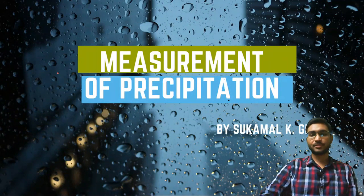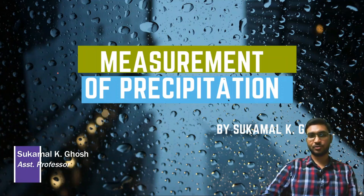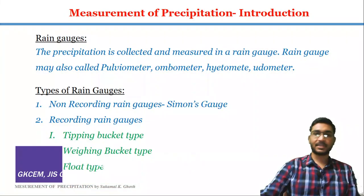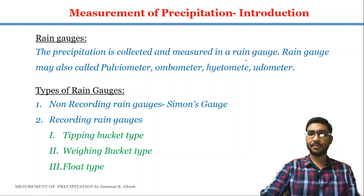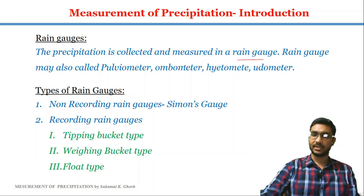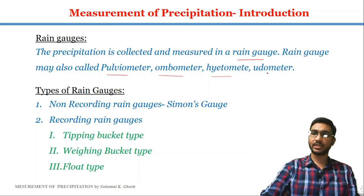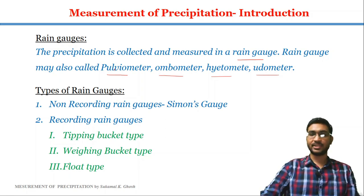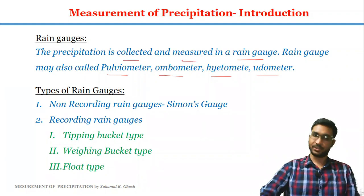Hello everyone, welcome to this video lecture of engineering hydrology. In this particular video we are going to discuss about how we can measure the precipitation. Precipitation is collected and measured in a rain gauge. The rain gauge may also be called as pluviometer, ombometer, hydrometer, or udometer. So a rain gauge may have several names, but the main function of a rain gauge is to collect and measure the rain or precipitation.